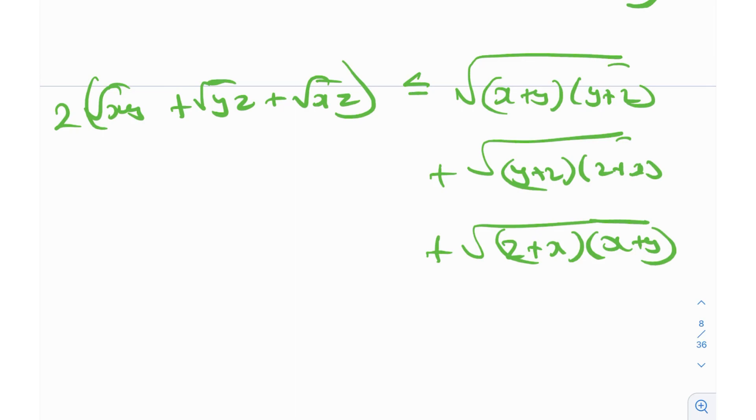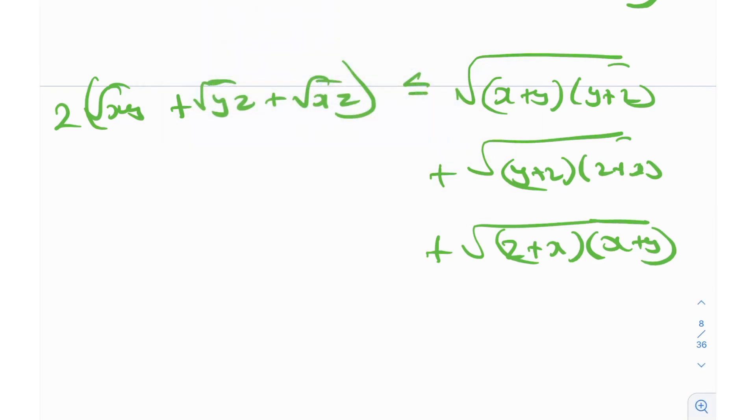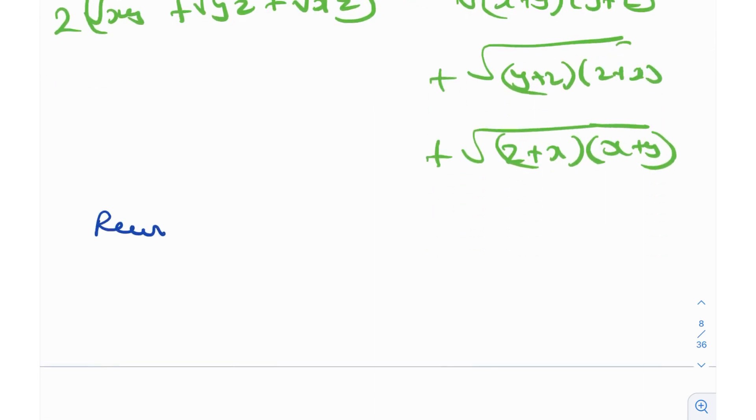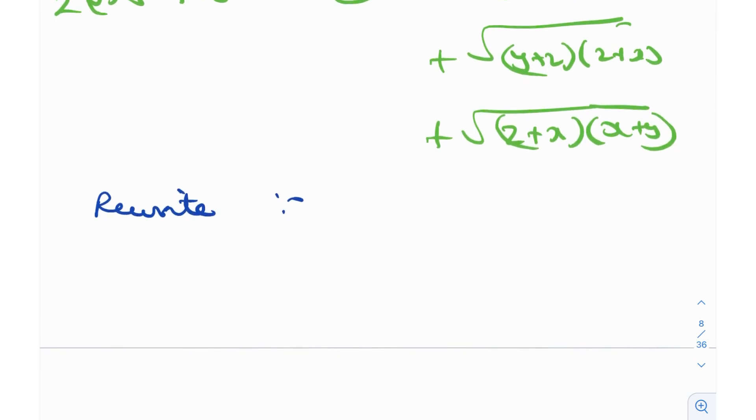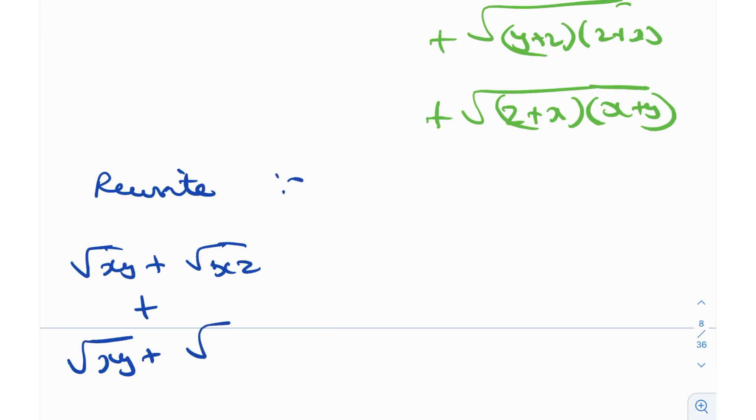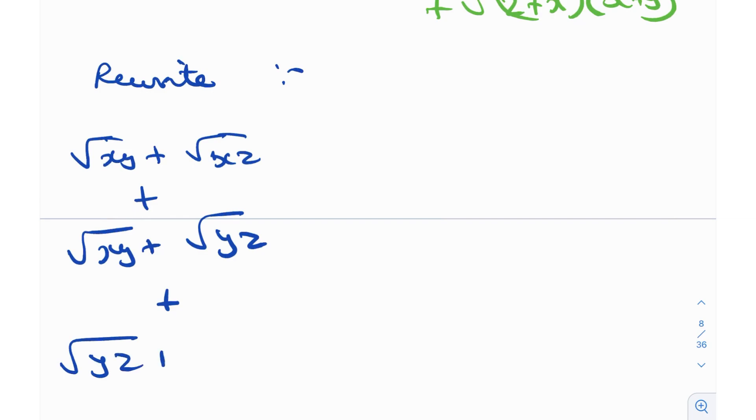And after that, if I divide by two on both sides, I'll get two root XY plus root YZ plus root XZ, I took two common basically. So that will be less than or equal to square root of X plus Y times Y plus Z, root Y plus Z times Z plus X. And then obviously, we have square root of X plus Z times X plus Y. So this is essentially the inequality that we've reduced it down to. And this is obviously a little easier to prove because now you see it's symmetric. It is something which is kind of easier to deal with, I would say. There's some sort of like cyclic structure being formed over here, if that makes sense.